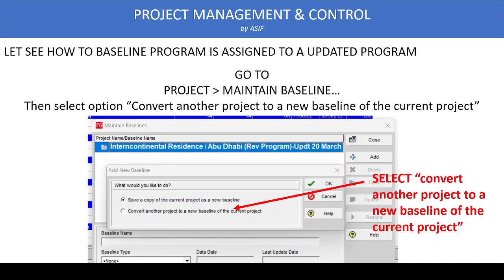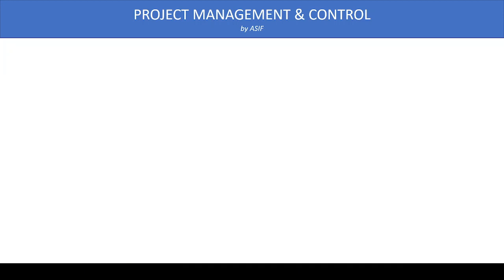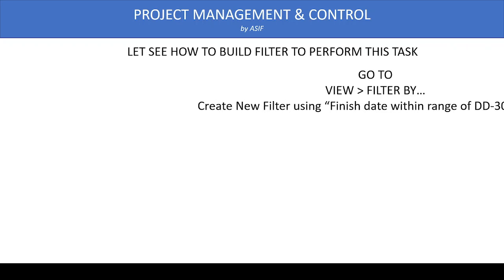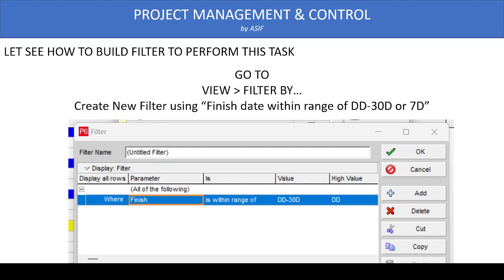If something goes wrong and you want to revert to the original situation, you just restore this project and your original program will be there. The other option is to convert another project into a baseline. We are using this second option — 'Convert another project to a new baseline of the current project.' Once we assign the baseline, to determine periodic achievement we use the filter option, setting the finish date within the range of data date minus the period — for example, data date minus 30 days for monthly or minus 7 days for weekly.